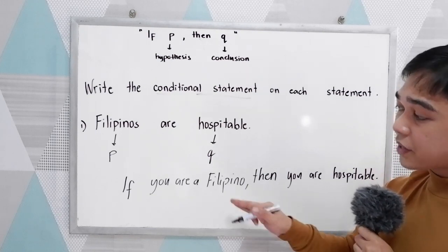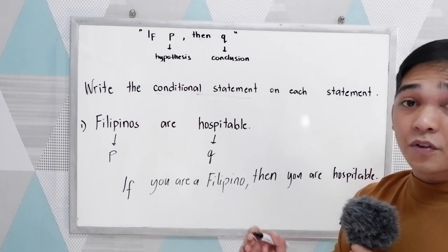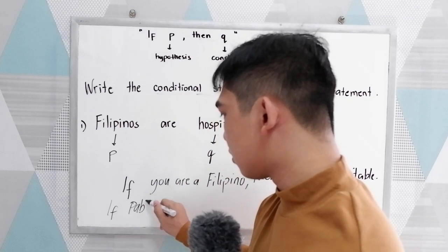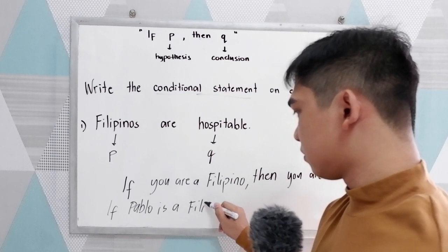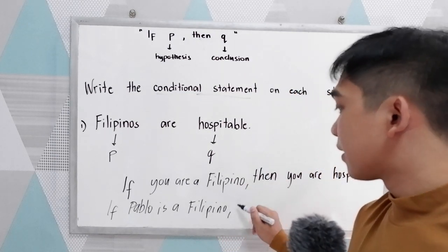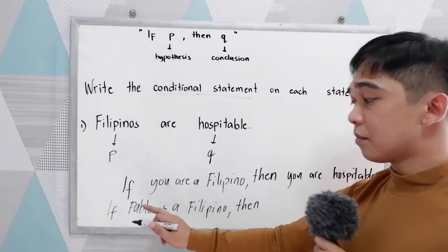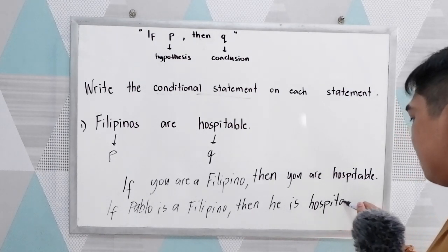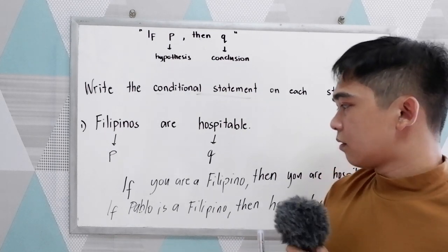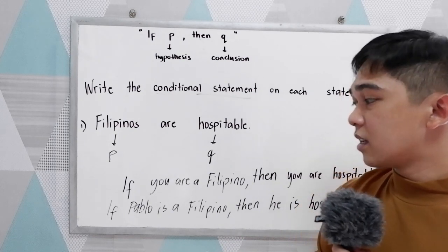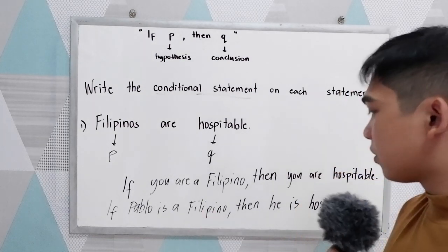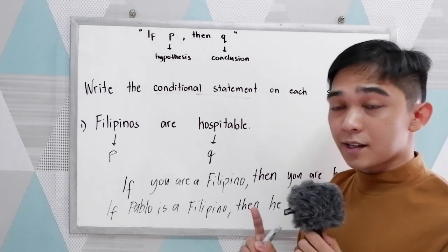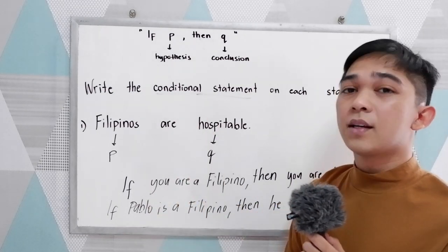In some cases, you can also write this using the name of a certain person. For example: 'If Pablo is a Filipino, then he is hospitable.' Or for a female: 'If Maria is a Filipino, then she is hospitable.' That is also correct. Remember, when writing a conditional statement, first identify your hypothesis and your conclusion.